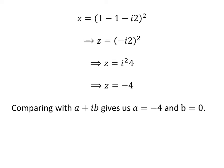Comparing z with a + ib gives us a = -4 and b = 0.